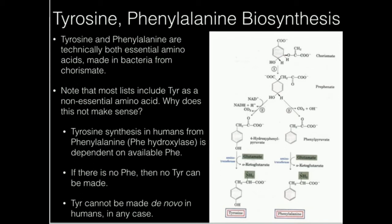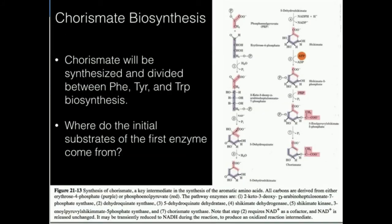One important thing to mention again — I brought it up when we talked about essential versus nonessential amino acids. Tyrosine, if you look at pretty much any list, is listed as a nonessential amino acid. Based on what we've seen in this pathway, why does that not make sense? It has to be essential because for something to technically be nonessential, the organism must be able to make it de novo. We cannot make tyrosine de novo in any amount to support life, because its synthesis comes from chorismate, which is not made in humans. Chorismate is found in bacteria, plants, and a few other organisms, but not in mammals. So if we can't make chorismate, we can't make tyrosine or phenylalanine.